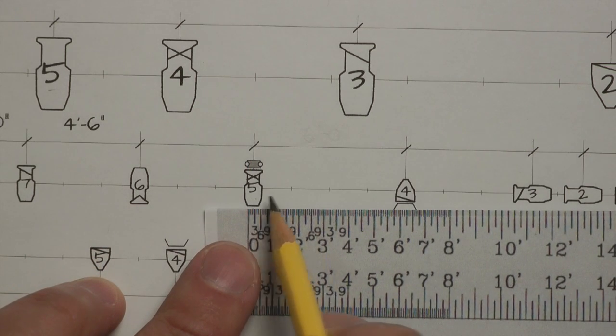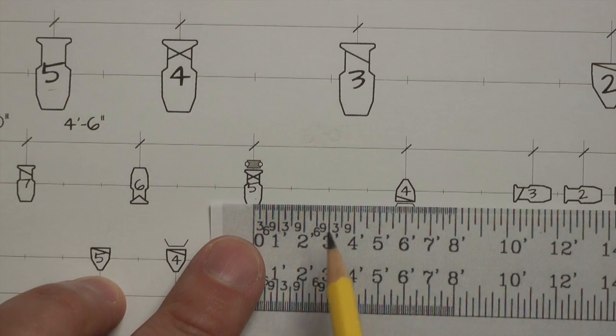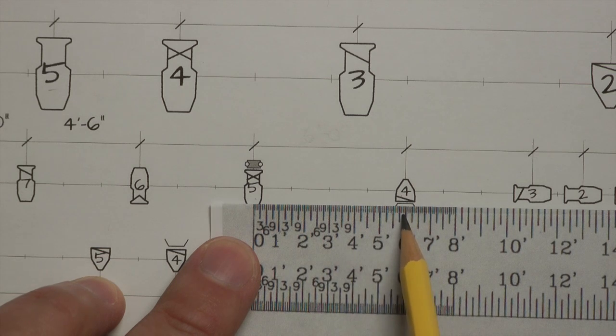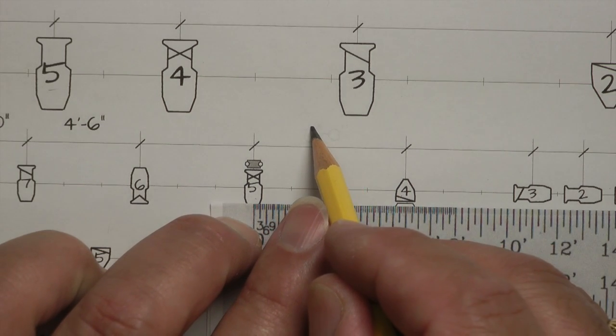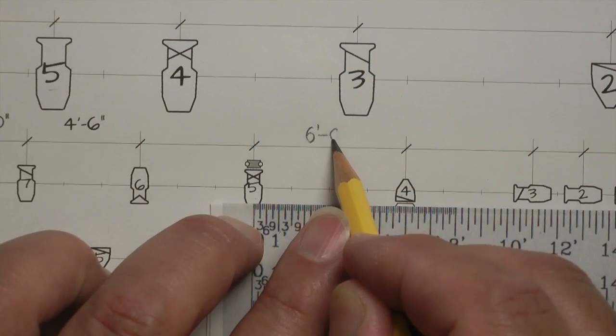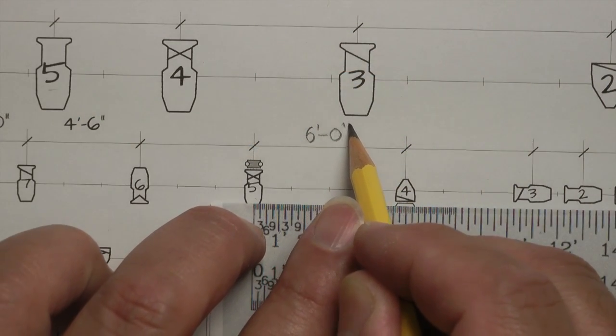And lay it down right here. And measure the distance between this unit and this unit. If I put it at center, we've got one, two, three, four, five, six feet. So we're going to write here six feet dash zero inches.